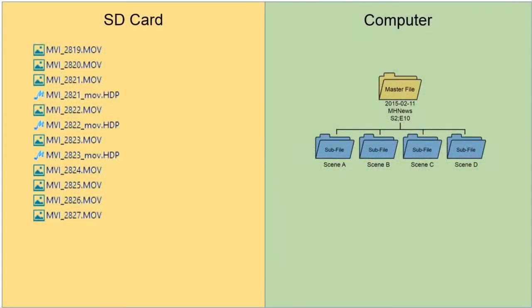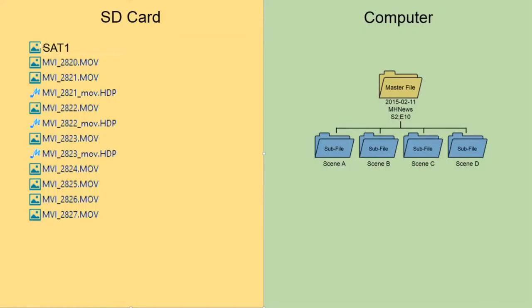In order to do this, I normally split my screen on my computer so I can see all the files from my SD card on the left side and the file explorer from my master file on the right side. Then I'll click on each of the video clips on my SD card, and within the first second or so of the video footage, I'll be able to see what scene and take the footage is from. Then I'll rename the file while it's still on my SD card — for instance, SAT1, which would stand for scene A, take one — and drag it over to copy it to the appropriate subfile in my master file.